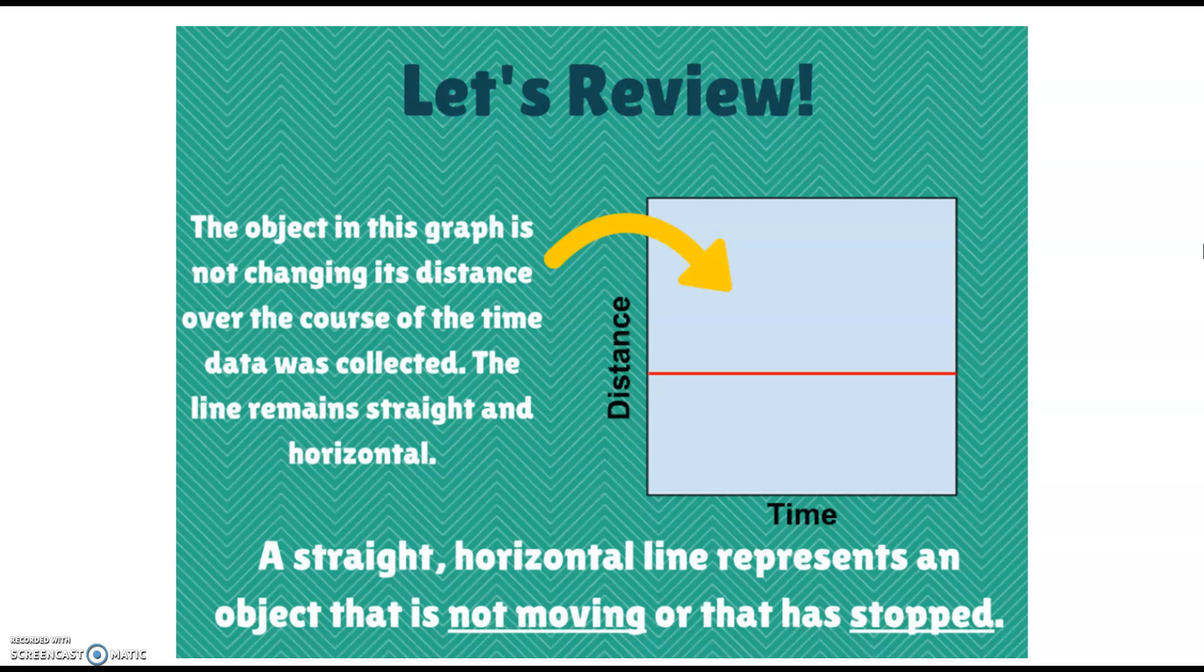The object in this graph is not changing its distance over the course of the time data was collected. The line remains straight and horizontal. The key here is that a straight horizontal line represents an object that is not moving or has stopped. So whenever you see a straight horizontal line that tells you that the object is now stopped. It is no longer moving.